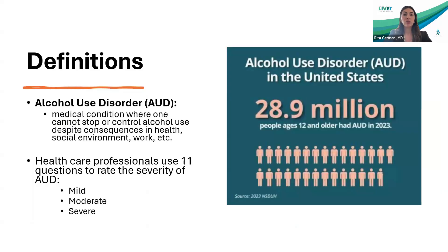When we turn to alcohol use disorder, we treat this as a disease — a medical condition where one cannot stop or control alcohol use despite consequences, whether in health, social environment, or work-related activities. We use a specific questionnaire of 11 questions to rate the severity of alcohol use disorder as mild, moderate, or severe. Unfortunately, alcohol use disorder is very common in the U.S. In 2023, there were almost 29 million patients diagnosed with alcohol use disorder. This is a disease, and we treat it as such.